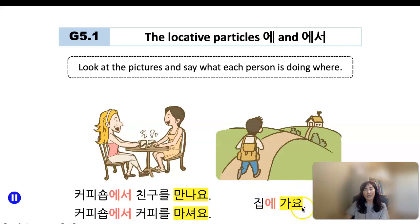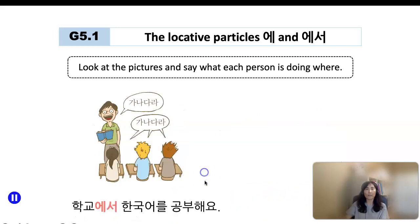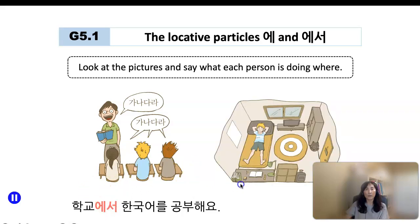However, 가다 is an exception. When you use the verb to go, you always add 에 to the location. 학교에서 한국어를 공부해요. Someone is studying Korean. Where? 학교. At the school. 학교에서 공부해요. However, for static locations such as 있어요, then you add 에.